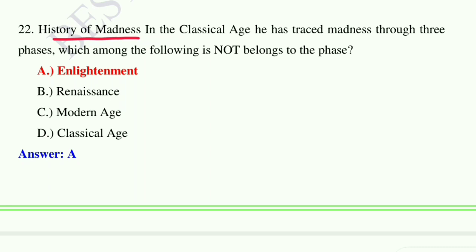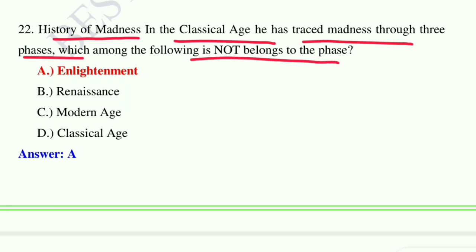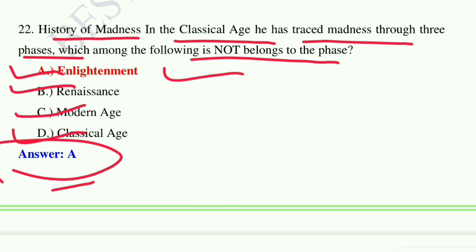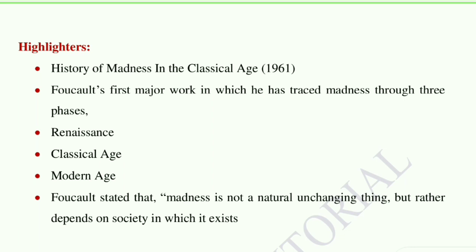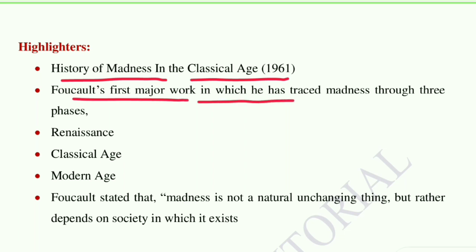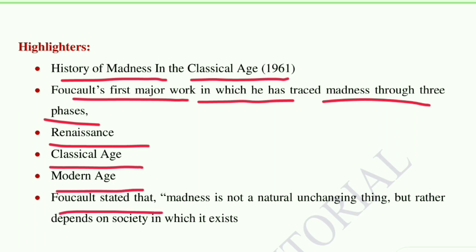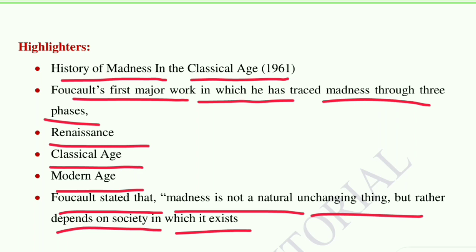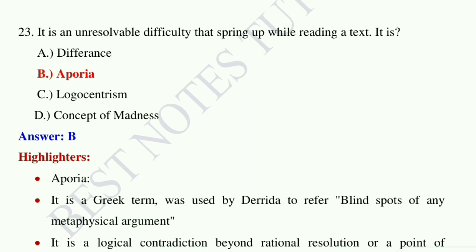Question number 22: In History of Madness in the Classical Age, Foucault traced madness through three phases. Which of the following does not belong to these phases? Option A: Enlightenment. Option B: Renaissance. Option C: Modern Age. Option D: Classical Age. The answer is option A — Enlightenment. History of Madness in the Classical Age was published in 1961, Foucault's first major work, tracing madness through three phases: Renaissance, Classical Age, and Modern Age. Foucault stated that madness is not a natural, unchanging thing but depends on the society in which it exists.